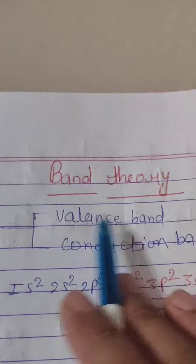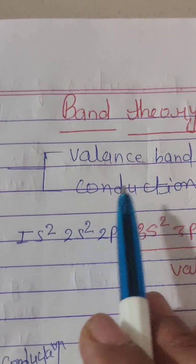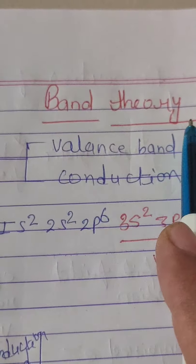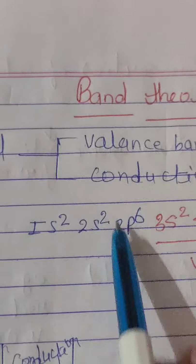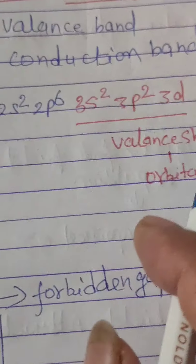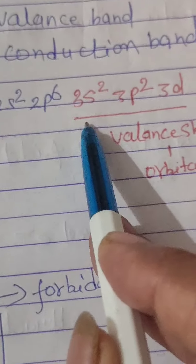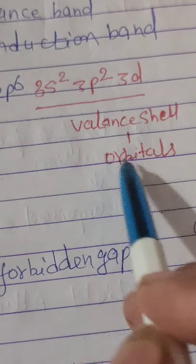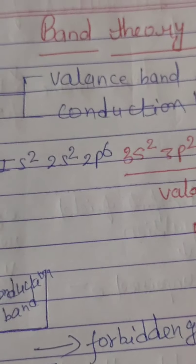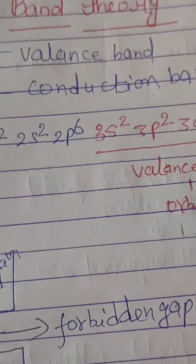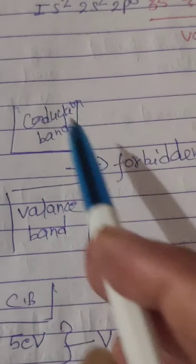Next is band theory. According to band theory, if we see the electronic configuration of solid elements — for example silicon: 1s² 2s² 2p⁶ 3s² 3p² — the outer shell orbitals are divided into two parts: the valence band and the conduction band.